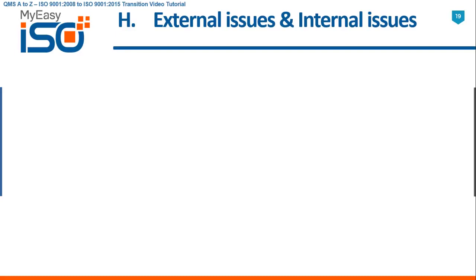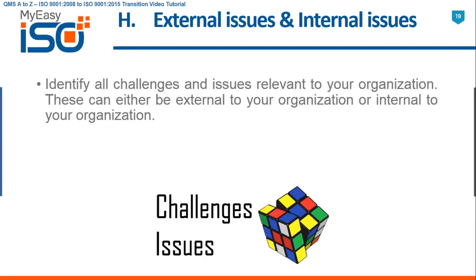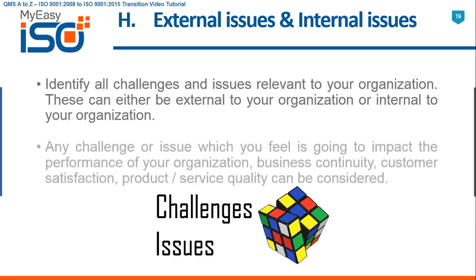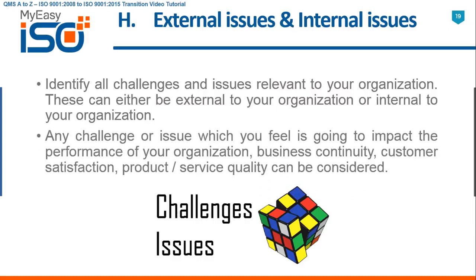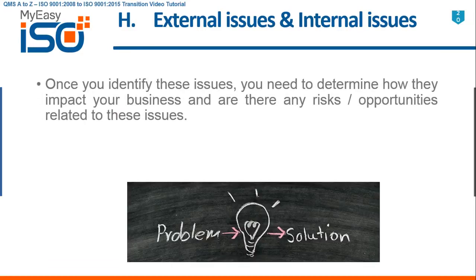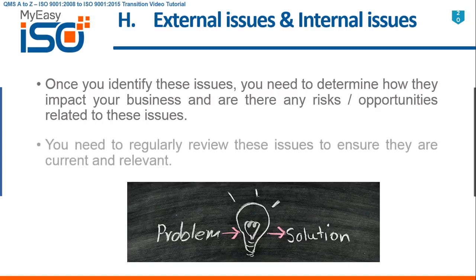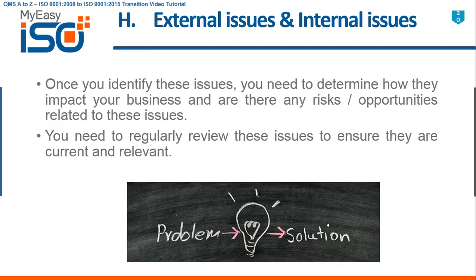H — External Issues and Internal Issues. Identify all challenges and issues relevant to your organization — these can either be external or internal. Any challenge or issue which you feel is going to impact the performance of your organization, business continuity, customer satisfaction, or product and service quality can be considered. Once you identify these issues, you need to determine how they impact your business and whether they are risks or opportunities. You need to regularly review these issues to ensure they are current and relevant.